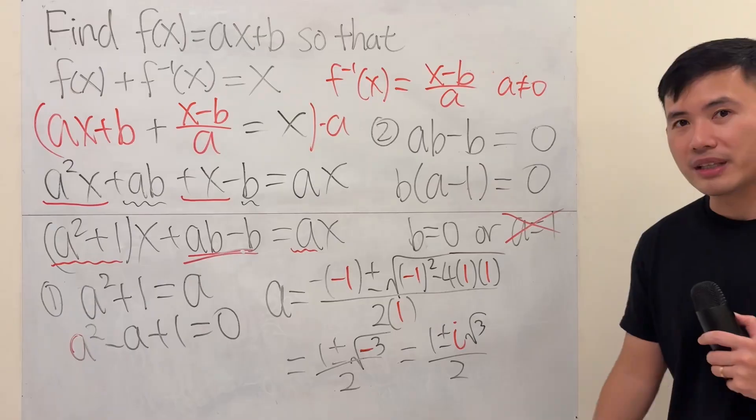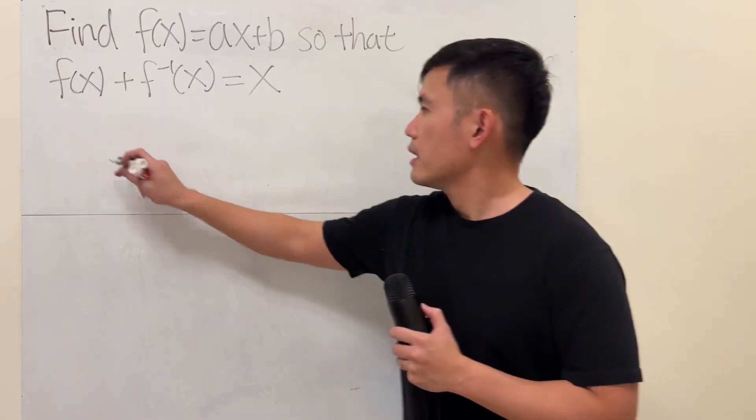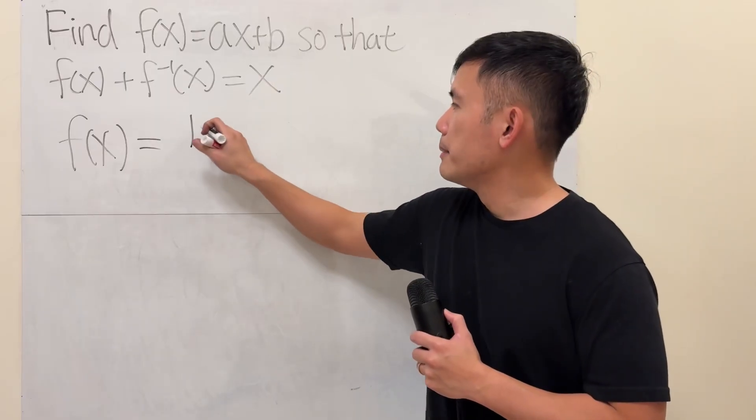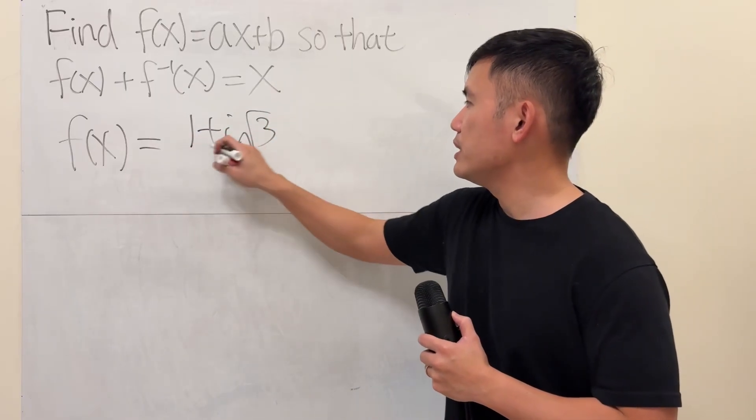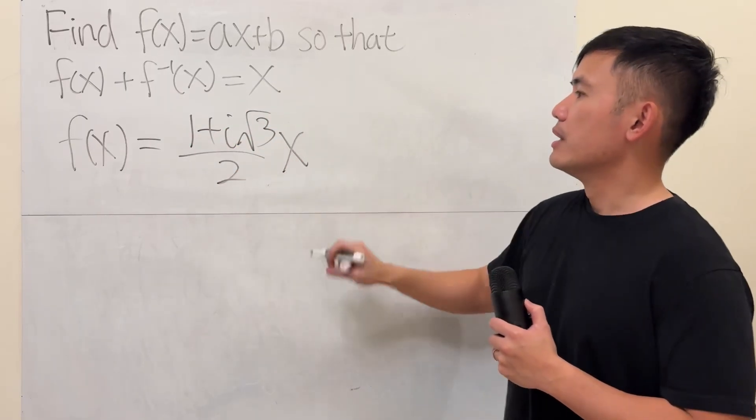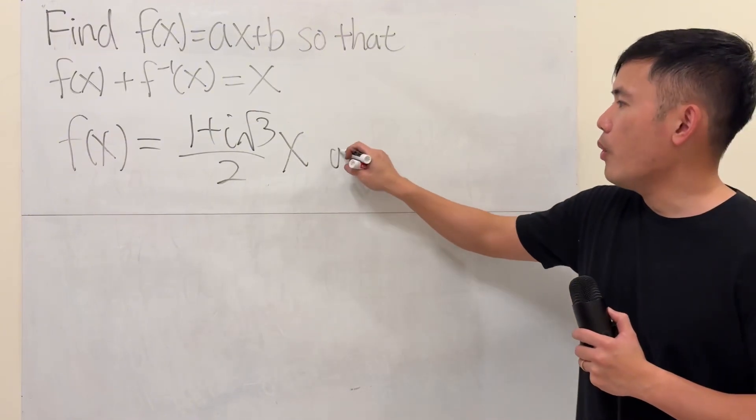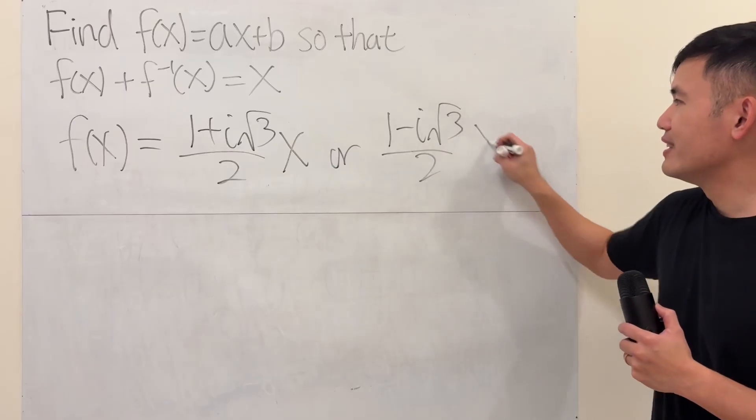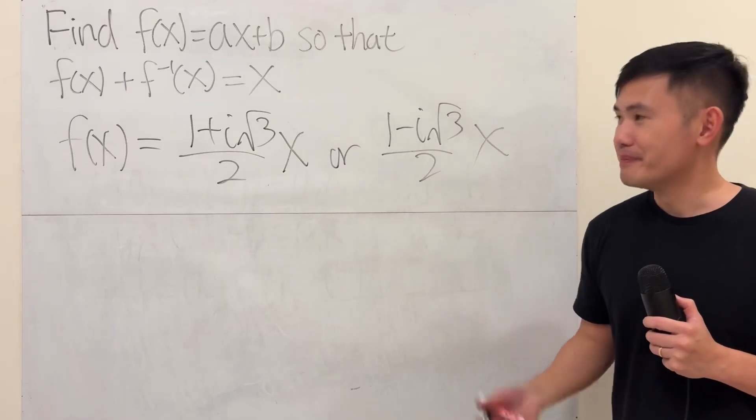So, finally, let me just write down the answer for you guys. Ladies and gentlemen, f of x equals 1 plus i square root of 3 over 2 x plus 0 or 1 minus i square root of 3 over 2 x. Pretty cool, huh?